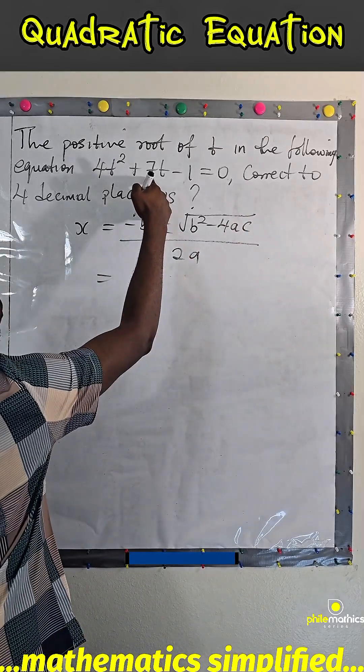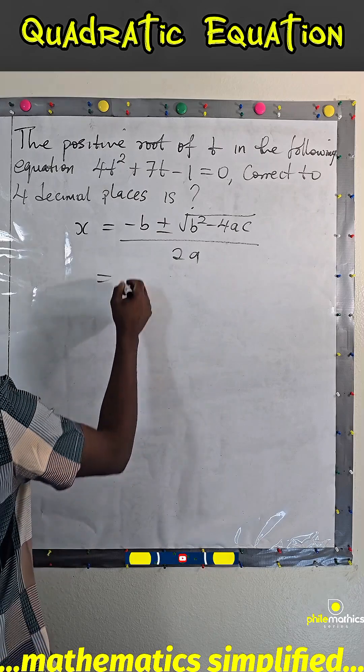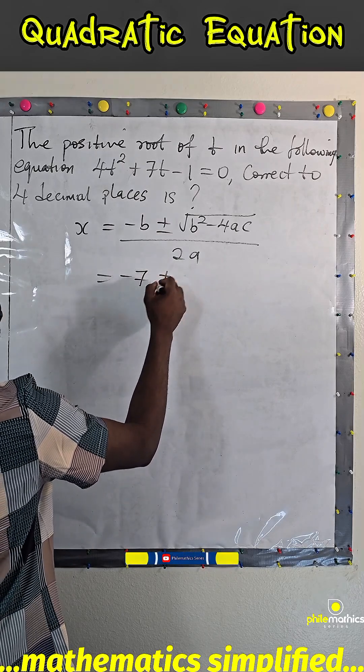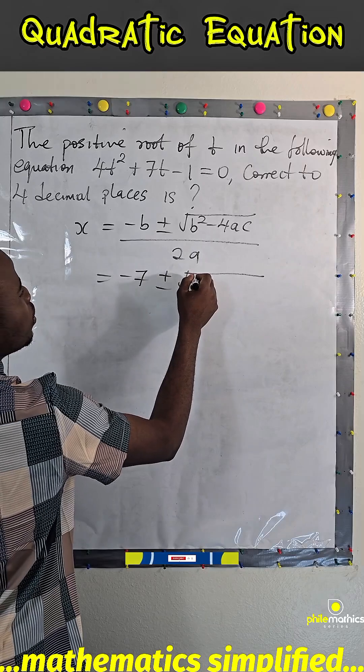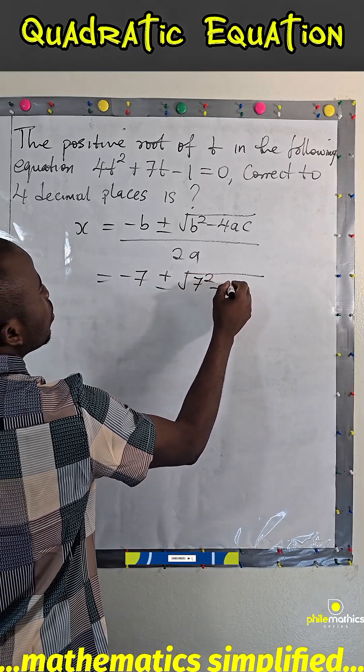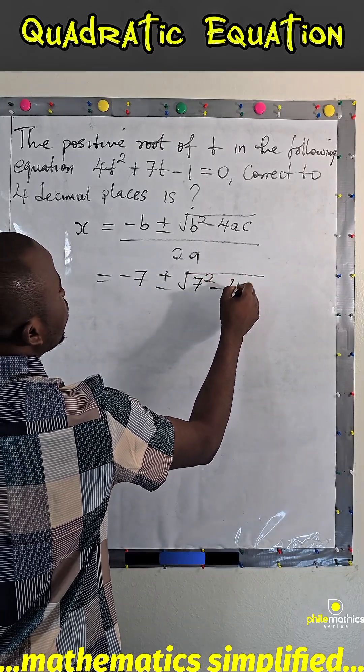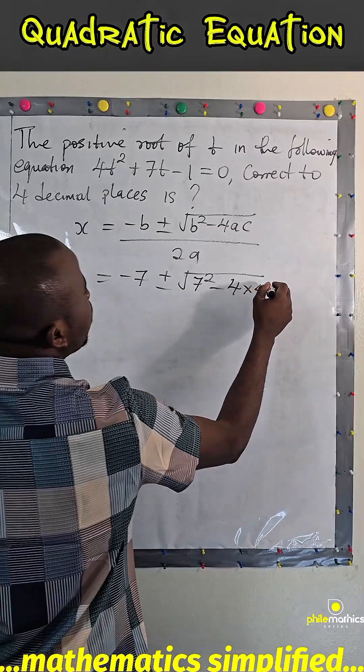Now our b is the coefficient of this t, which is 7. Plus or minus, b² is 7², which is 49. a is 4 and c is -1.